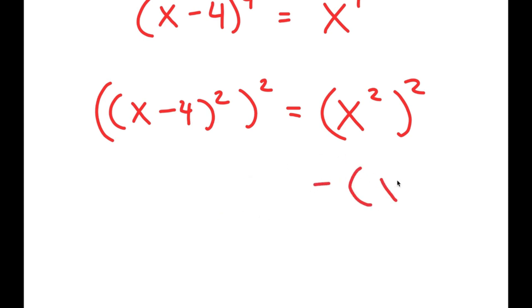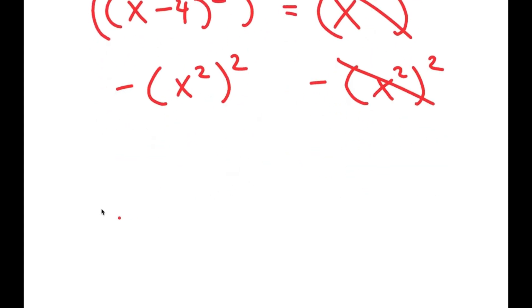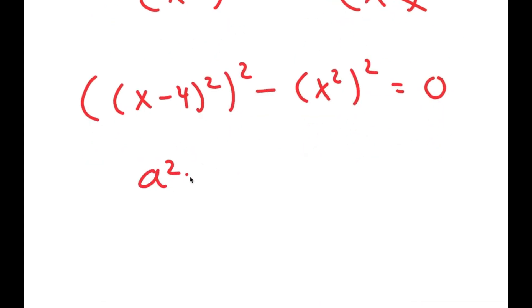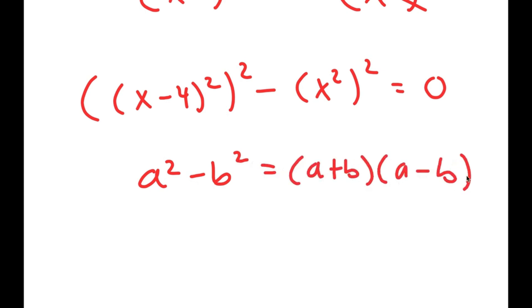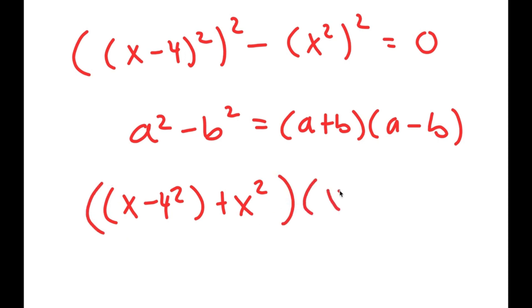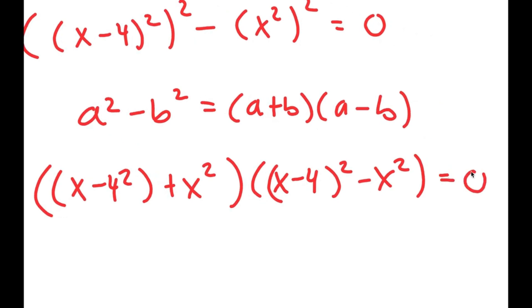Now I'm going to subtract x squared to the power of 2 from both sides. These two cancel out, and I get (x minus 4) squared to the power of 2, minus x squared to the power of 2, is equal to 0. Now if I have something in the form a squared minus b squared, this equals a plus b times a minus b.